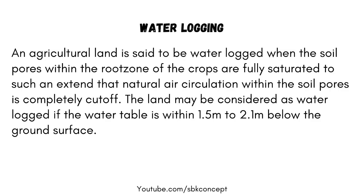Waterlogging. An agricultural land is said to be waterlogged when the soil pores within the root zone of the crops are fully saturated to such an extent that natural air circulation within the soil pores is completely cut off. The land may be considered as waterlogged if the water table is within 1.5m to 2.1m below the ground surface.